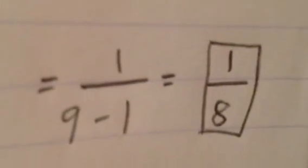Then negative 1 squared over 3 squared minus 1 is 1 over 9 minus 1, which is 1 eighth.